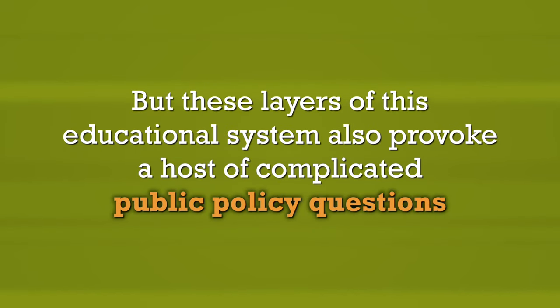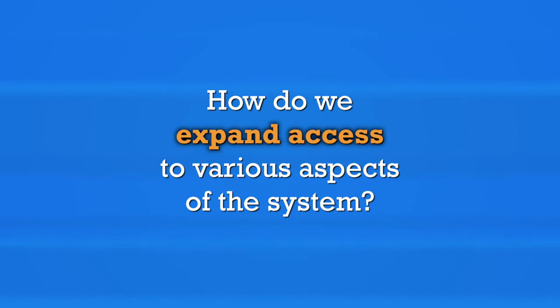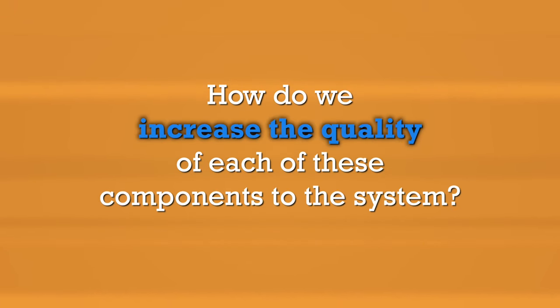These are the personal choices that my family has to make in the system, but layers of this educational system also present a host of complicated public policy questions, which we can largely boil down to two questions. One: how do we expand access to various aspects of the system — today, mostly, how do we expand access to college? And two: how do we increase the quality of each of these components of the system? How do we make sure that pre-K, elementary school, and high school educations are really doing the job we want them to do in order to prepare young people for the economy of today and the economy of the future?